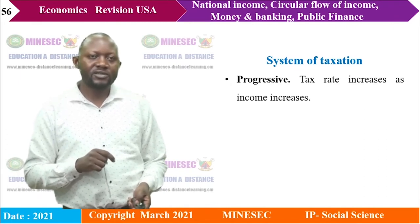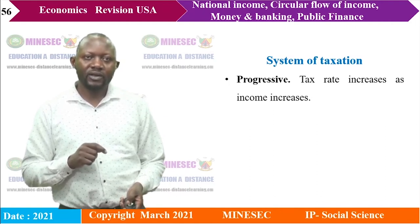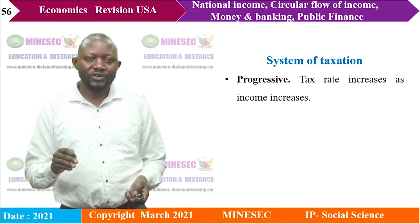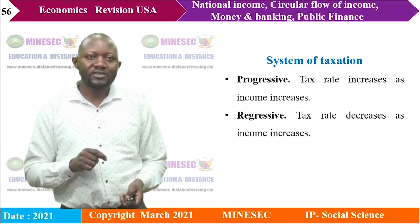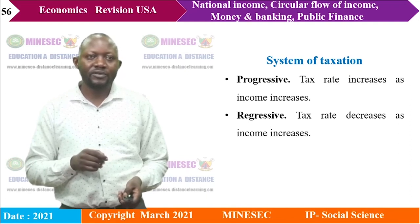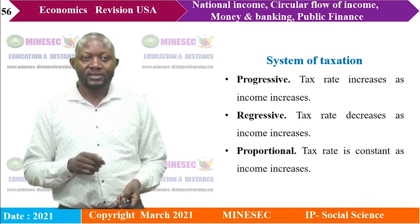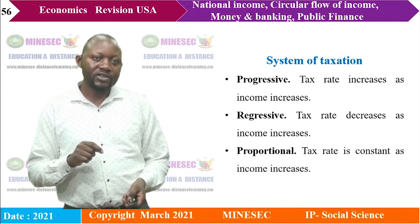There are three tax systems: progressive tax — the tax rate increases as income increases, taking more from the rich and less from the poor, narrowing the gap; regressive tax — the tax rate decreases as income increases, so the poor sacrifice more; and proportional tax — everyone pays the same percentage, with a constant tax rate as income increases. The average rate of tax (ART) = tax amount / total income × 100. The marginal rate of tax = change in tax amount / change in total income × 100.